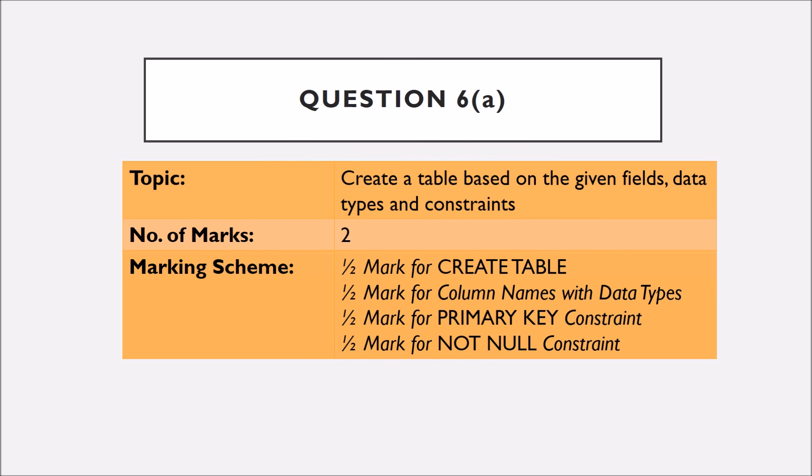Question number 6, Part A is based on creating a table based on given fields, data types and constraints. It is of 2 marks. Please note that half mark is for writing create table, half mark for column names with data types, half mark for primary key constraint and half mark for not null constraint.